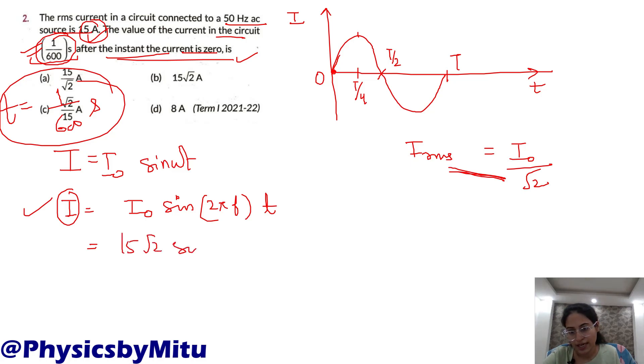15 root 2 sine 2 pi f, f is 50 hertz, small t is given as 1/600. This will be 12, this is 6. What is sine pi by 6? Sine pi by 6 is sine 30.